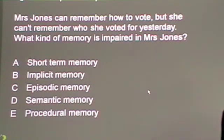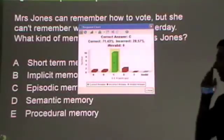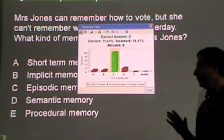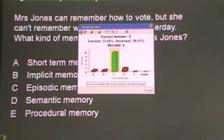Here's a quick quiz to test. Mrs. Jones can remember how to vote, but she can't remember who she voted for yesterday. What kind of memory is impaired in Mrs. Jones? It's episodic memory — my mistake, thanks for correcting me. Very good.